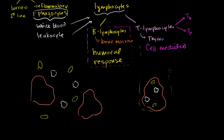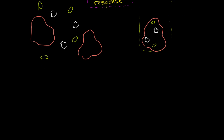Let's talk about the humoral response, which deals with B lymphocytes. B lymphocytes, or B cells, are white blood cells — a subset of white blood cells called lymphocytes. They come from the bone marrow, and that's where the 'B' comes from.